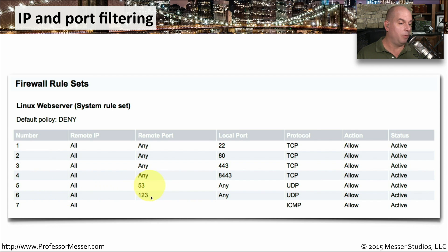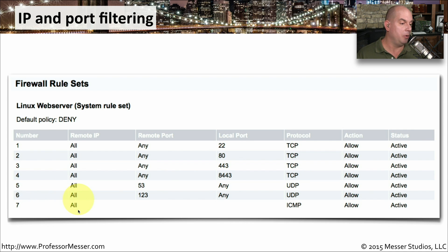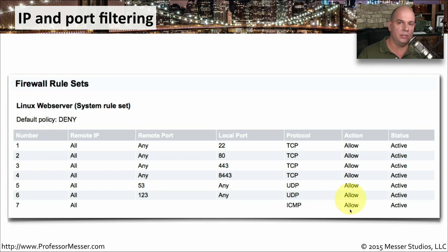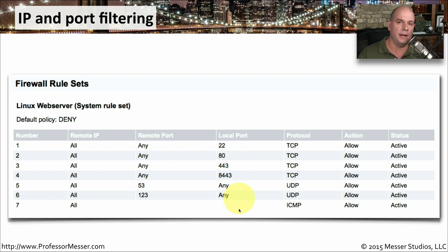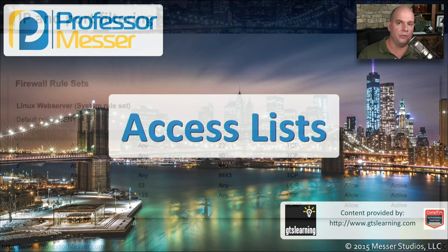Rule six is for remote port 123, normally used for time services (NTP). Rule seven has a remote IP address of all with no port numbers, because it uses a different protocol — ICMP — which does not have port numbers associated with it. That allows ping and the ability to determine if that server is alive. Any traffic passing into the server that doesn't match any of these access list rules will hit the implicit deny at the bottom, and all other traffic will be dropped.